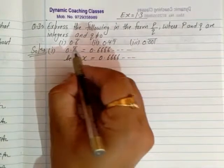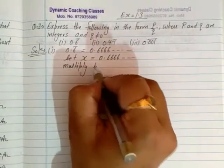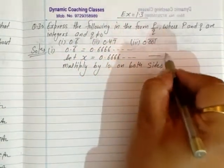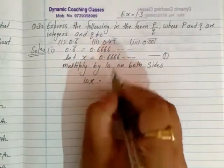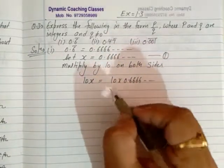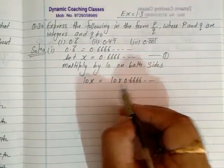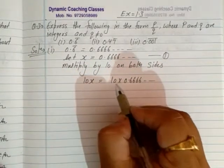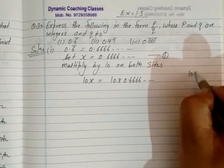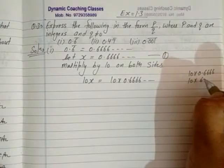Now, how do we solve this? I will multiply both sides by 10. So 10x equals 10 multiplied by 0.6666... You should know that when you multiply by 10, the decimal point shifts one place. When I multiply by 10, the point shifts 1 place, giving 6.666... If it were 100, the point would shift 2 places.